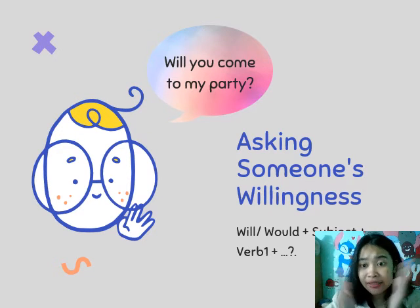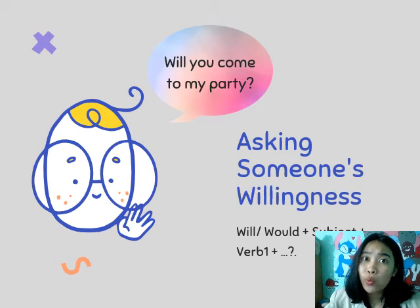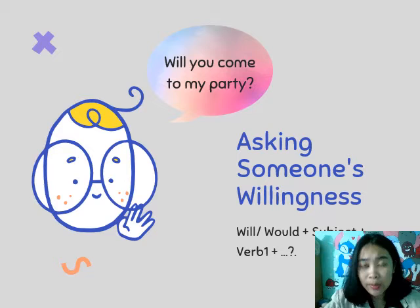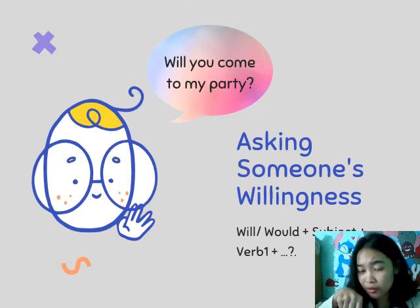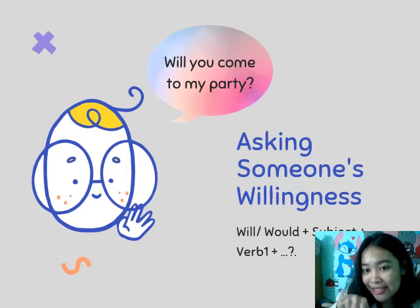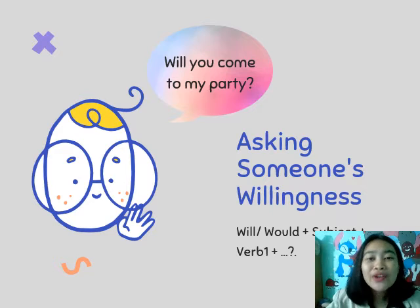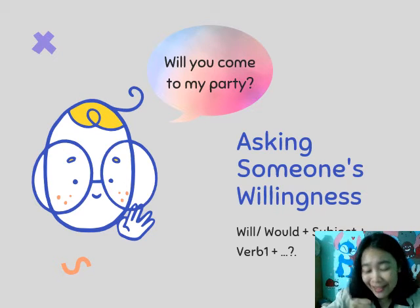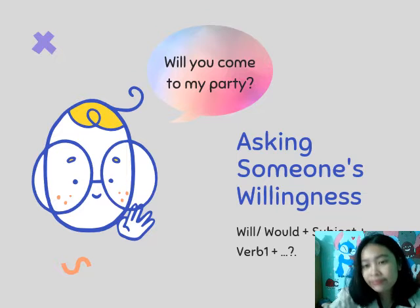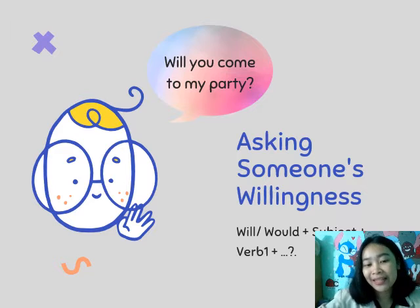How to ask someone's willingness: use the pattern will/would + subject + verb 1 + ...? Don't forget the question mark. For example: 'Will you come to my party?' — 'Yes, I will.' Or you can answer: 'No, I won't, because...' Something like that.